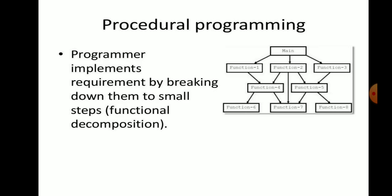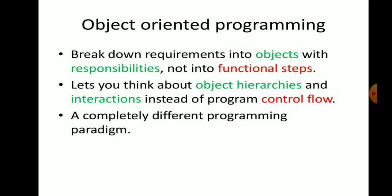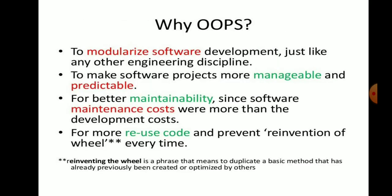Object-oriented programming focuses on binding the attributes and behavior of real-world entities represented using objects, with features like abstraction, encapsulation, inheritance, and polymorphism. OOP breaks down requirements into objects with responsibilities, not into functional steps. It defines object hierarchies and interactions instead of program control flow. We use OOP to modularize software development — just like any other engineering discipline — to make software projects more manageable, predictable, maintainable, and to allow more code reuse.